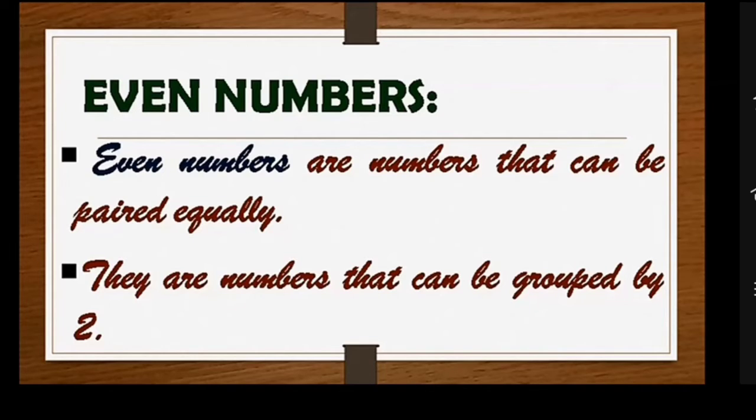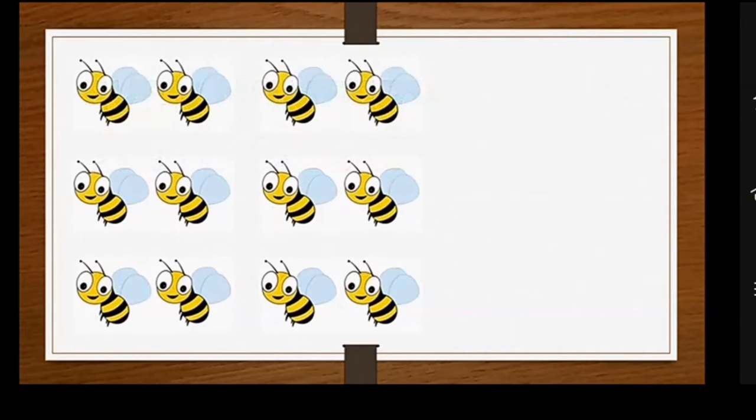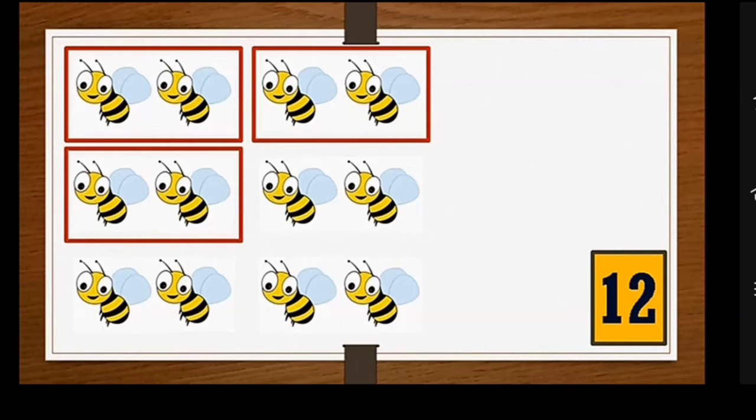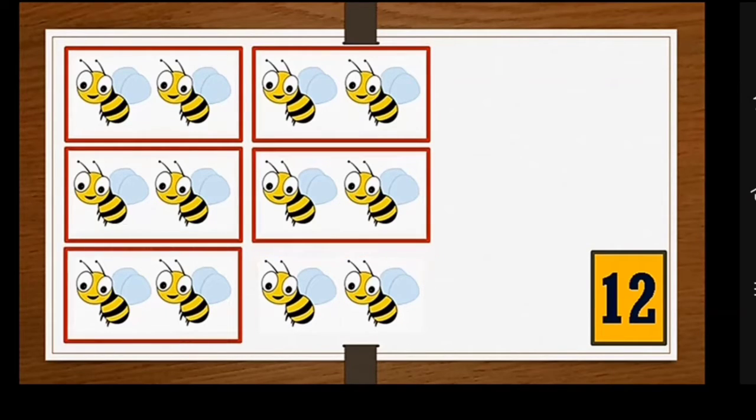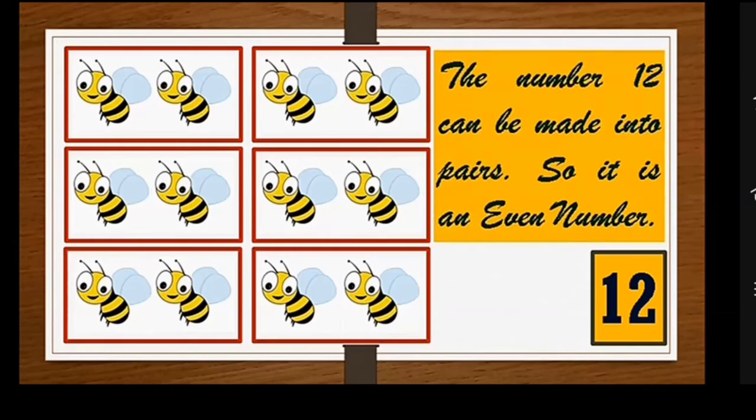Let's see in detail. For example, in this slide, let's observe 12 cute little bees. Now find whether the number 12 is even or odd. So we first try to make them into pairs. Pair means any two objects or two things. One, two, three, four, five, six. As the number 12 can be made into pairs, it is an even number.